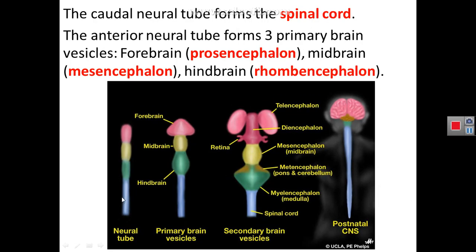The anterior part of the neural tube will show dilatations while the posterior part remains cylindrical. The posterior cylindrical part will form the spinal cord, while the anterior part that dilates forms three primary brain vesicles: the forebrain called prosencephalon, the midbrain called mesencephalon, and the hindbrain called rhombencephalon.